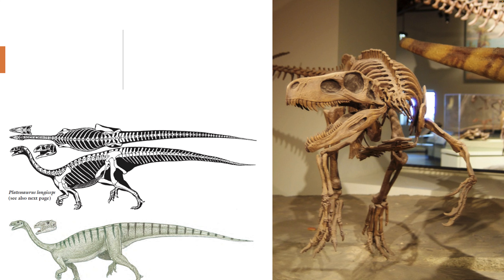Dinosaurs like Herrerasaurus and Plateosaurus were common throughout this period. And once the Triassic to Jurassic extinction happened, these dinosaurs and their relatives very quickly reproduced and diversified to form the enormous ecosystem of the Jurassic.